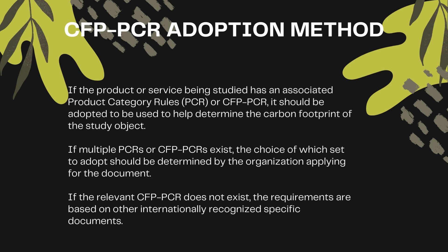CFP-PCR adoption method. If the product or service being studied has an associated product category rules (PCR) or CFP-PCR, it should be adopted to help determine the carbon footprint of the study object. If multiple PCRs or CFP-PCRs exist, the choice of which set to adopt should be determined by the organization applying for the document. If the relevant CFP-PCR does not exist, the requirements are based on other internationally recognized specific documents.